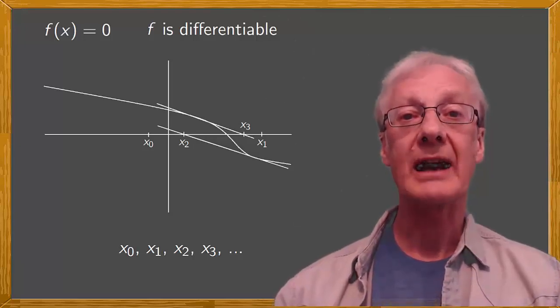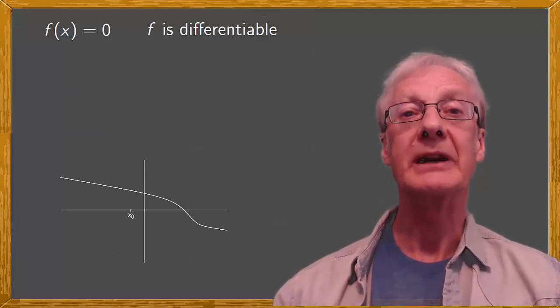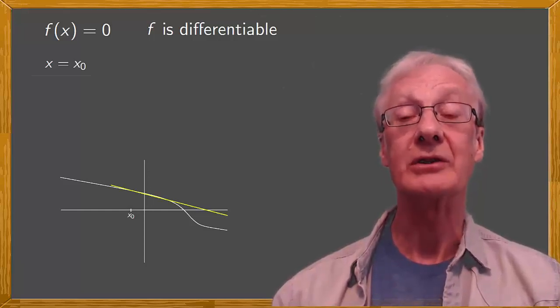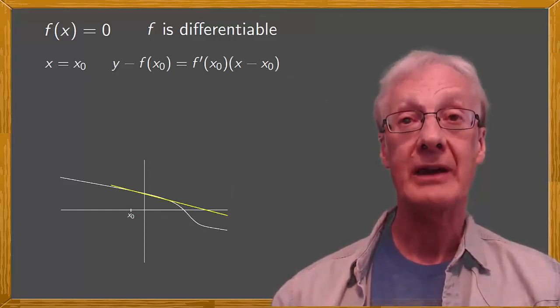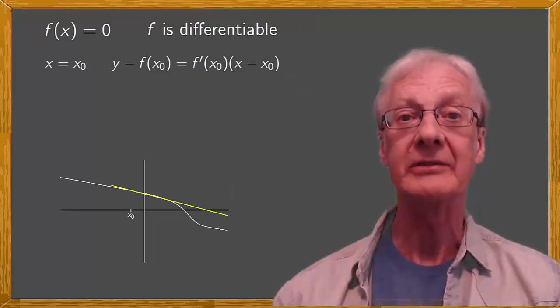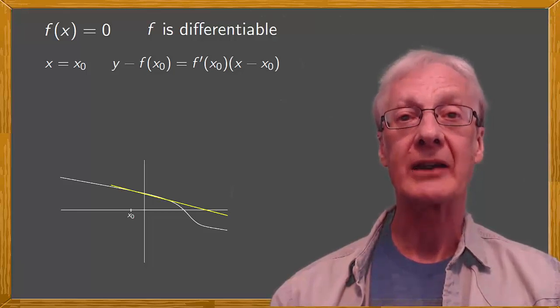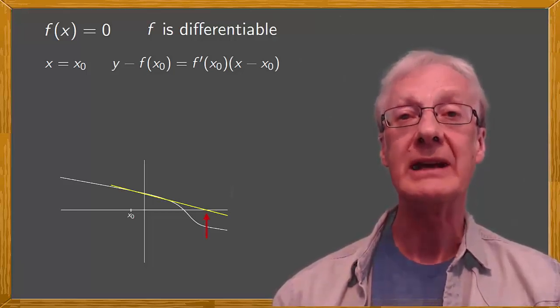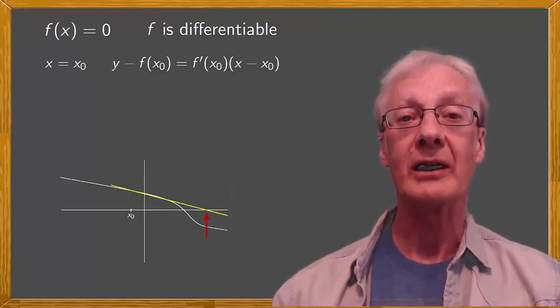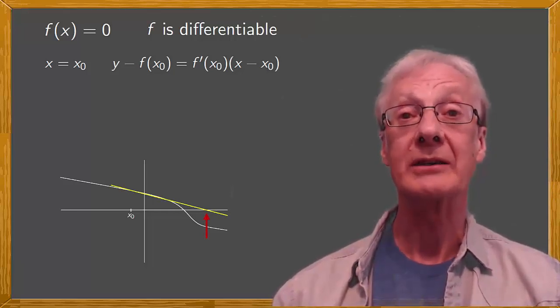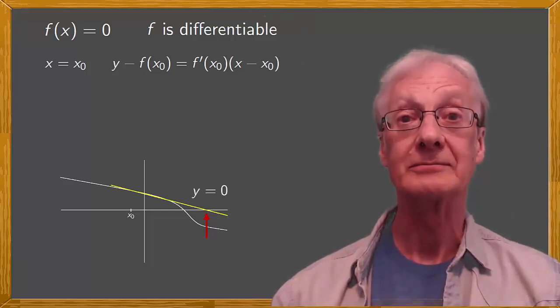Now let's go to the analytical part and obtain a general formula for this method. We started from x0, for which the tangent line has the equation y minus f of x0 equals f prime, the derivative of x0, times x minus x0. x1 is obtained from the intercept of this line with the x-axis. On the x-axis, we're at a height of 0, so y equals 0.